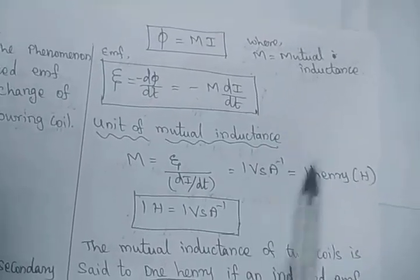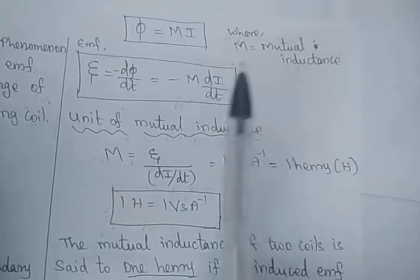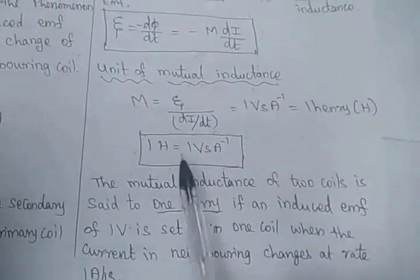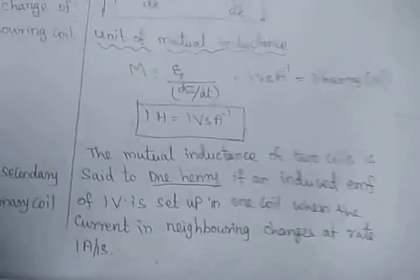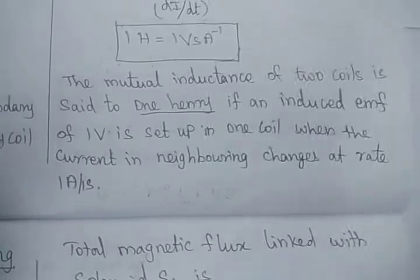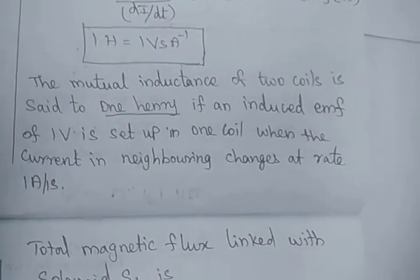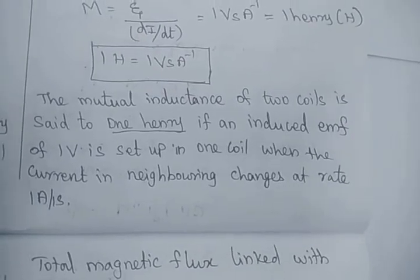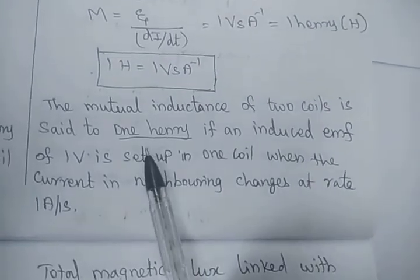Mutual inductance is also measured in Henry, just like self inductance, because it is inductance. H equals 1 volt·second per ampere. We can define the Henry in terms of mutual inductance as well. In the previous video, the definition of 1 Henry based on self inductance was explained. Now we see what 1 Henry means based on mutual inductance.